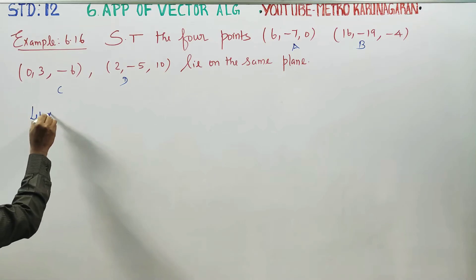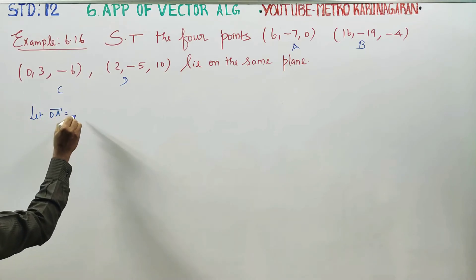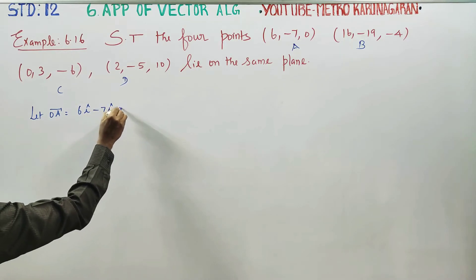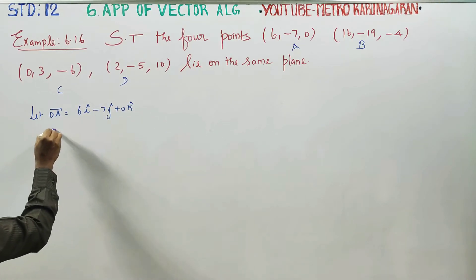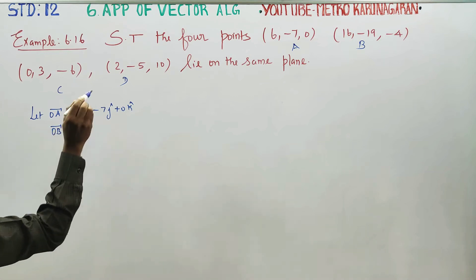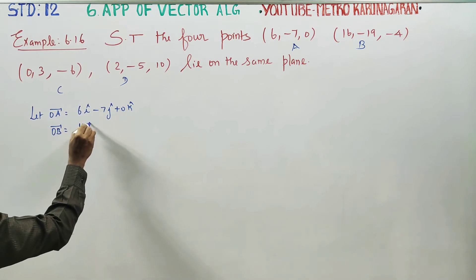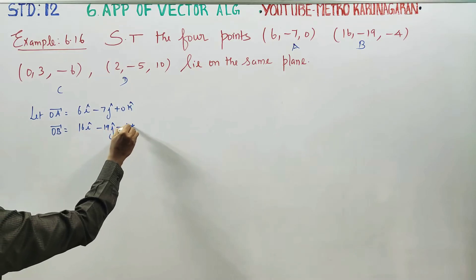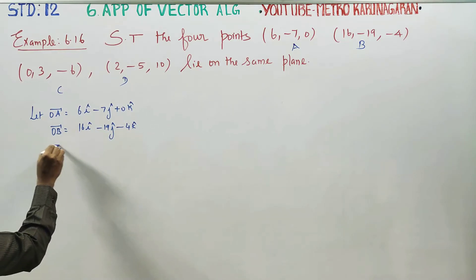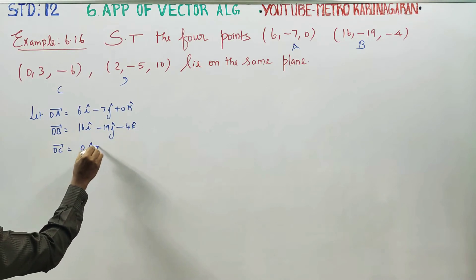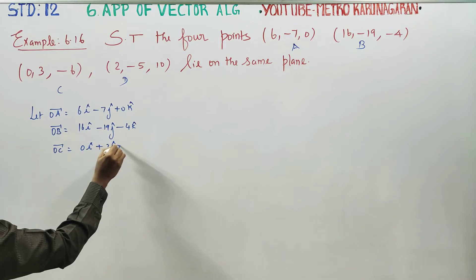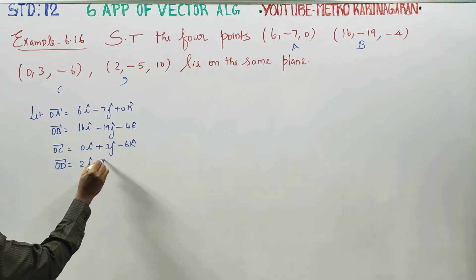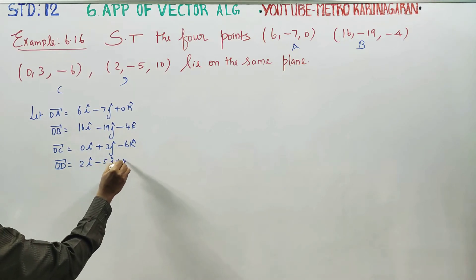The position vector of A is 6i minus 7j plus 0k. The position vector of B, OB vector, is 16i minus 19j minus 4k. OC vector is 0i plus 3j minus 6k, and OD vector is 2i minus 5j plus 10k.